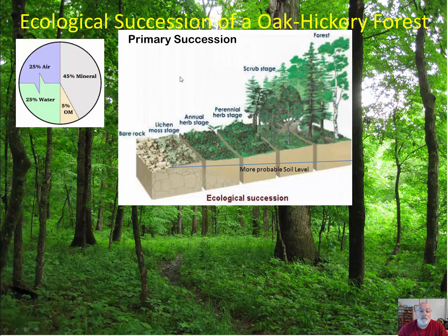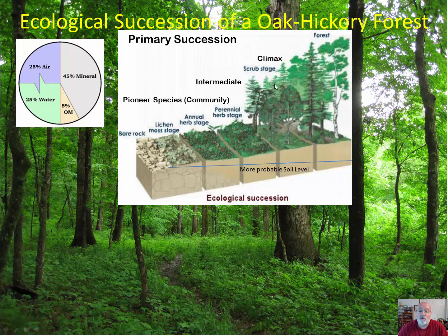In primary succession we start with primary species — lichen, some small insects, possibly lizards. Then we get the annual herb stage. As the soil gets thicker and the community gets stronger we get intermediate perennial species — annuals need seeds every year, while perennials come back from roots. Eventually we end up with the climax forest, oak hickory in our case, though we do have some pine closer to the ocean where soil type differs.